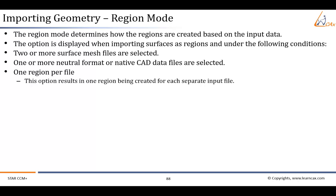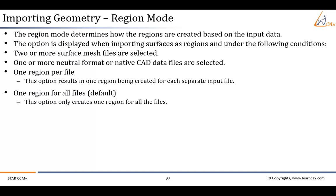When importing multiple surface mesh files, two different options are provided for region mode. The first is 'one region per file,' which results in one region being created for each separate input file — the region name matches the file from which it came. The second is 'one region for all files,' which is the default and only creates one region for all files. An additional option to combine patches across files is provided to group duplicate patch definitions into the same boundary. The default setting does not combine patches, and the patch combine option is not provided for STL files.